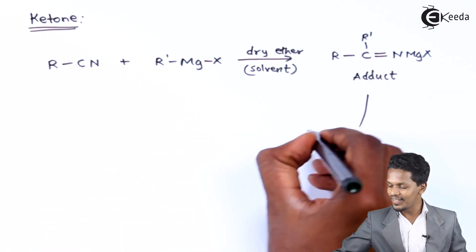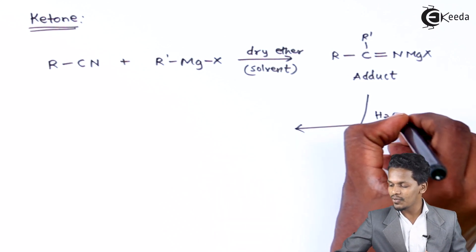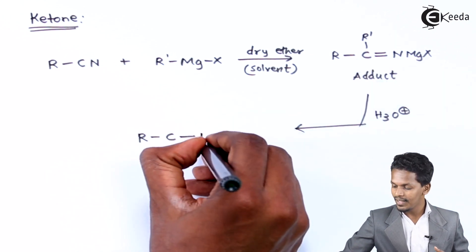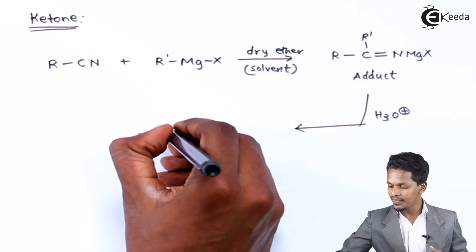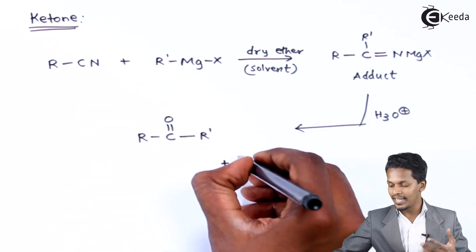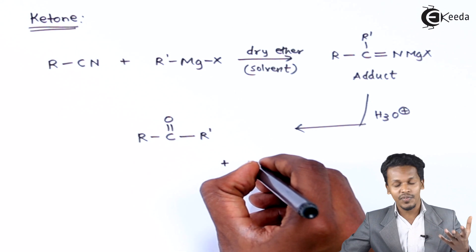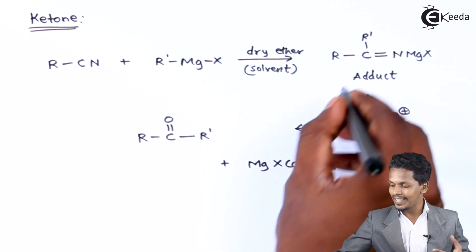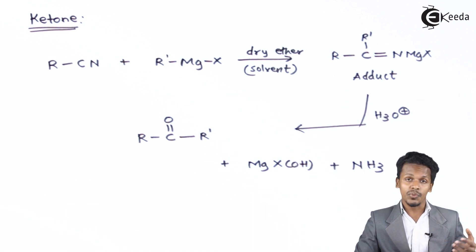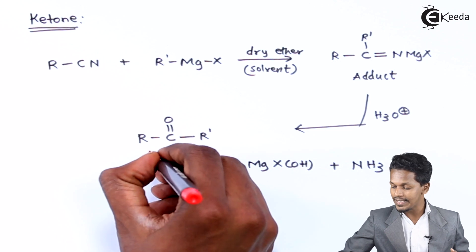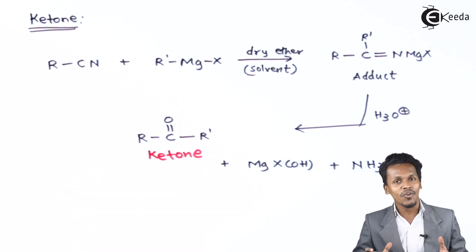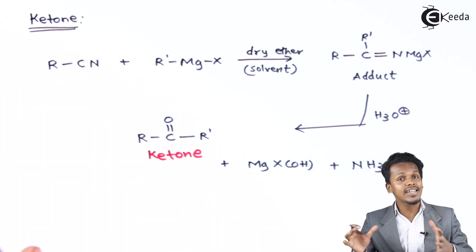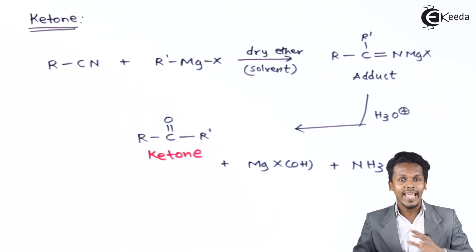Again the reaction undergoes acid hydrolysis, and we obtain R–C(=O)–R′ — a ketone — as the main product, with the same byproducts MgX(OH) and NH₃. So to obtain a ketone, instead of using HCN we use an alkyl cyanide. This was the general reaction; now let me discuss an example to make it clearer how a ketone is obtained.